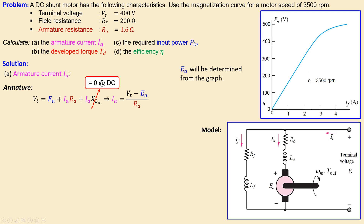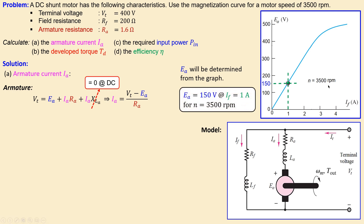The back EMF can be determined from the magnetization graph. Looking at the graph, for a specific field current you can read the associated back EMF value. For example, at one ampere of field current you will see 150 volts for the back EMF — and that is specific to this rotation speed. But we need to find what our actual field current is, so this one-ampere example is just illustrative.